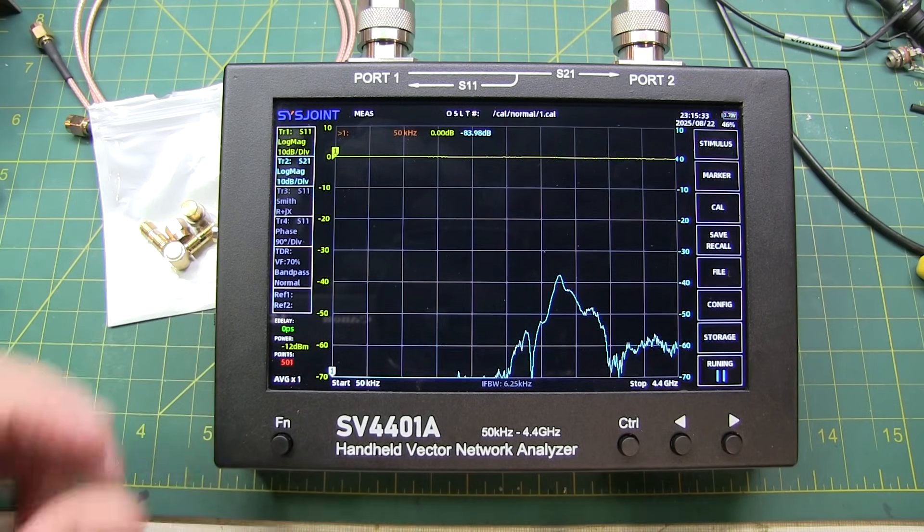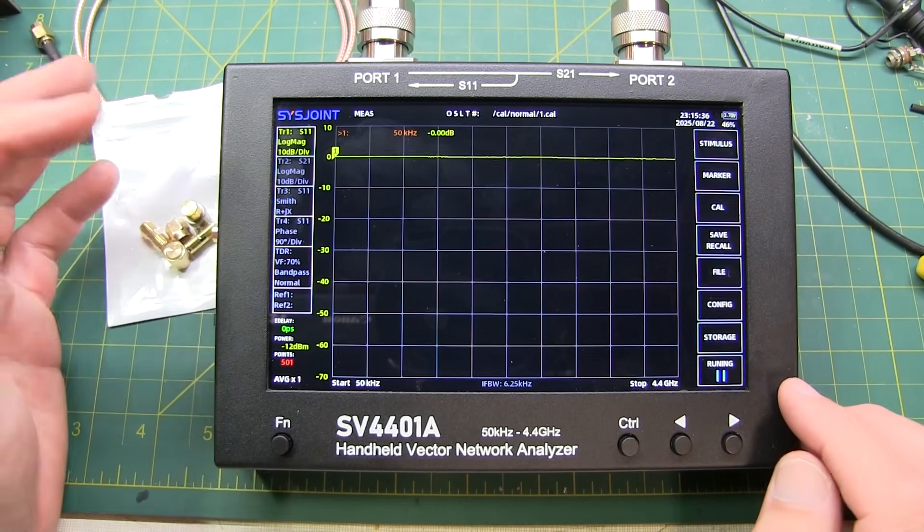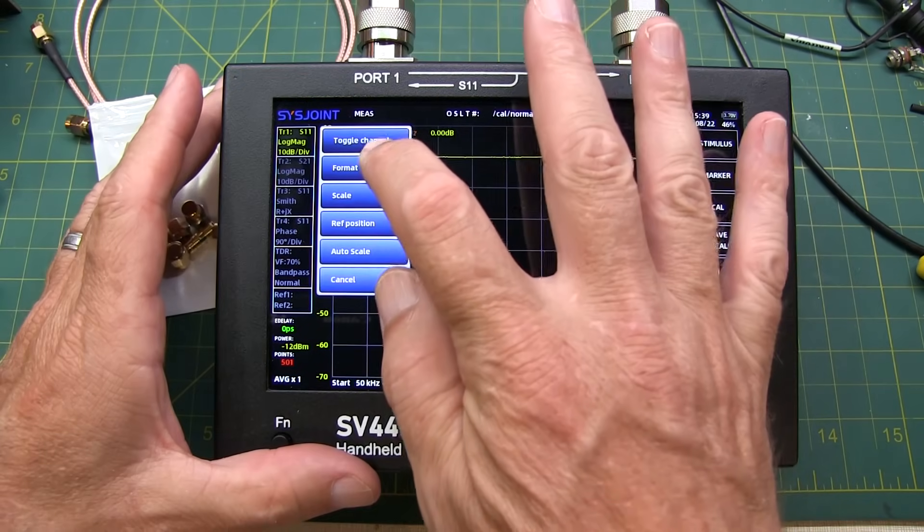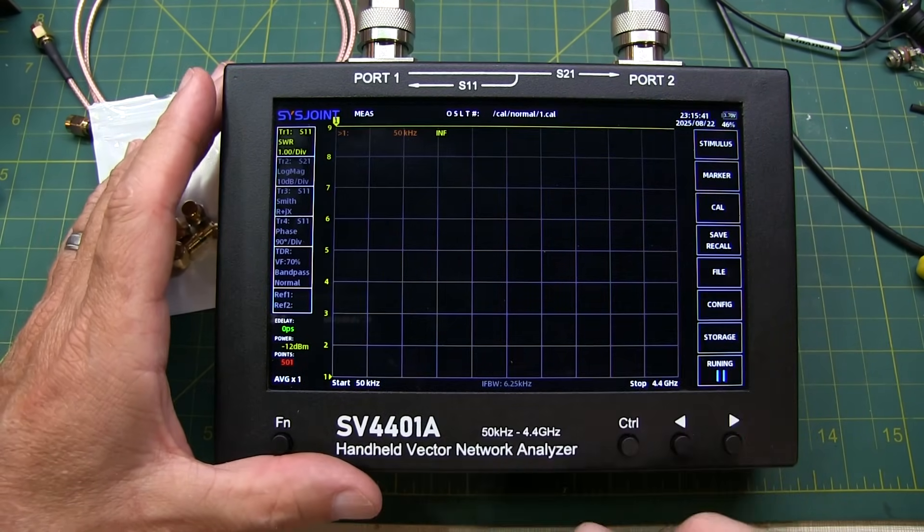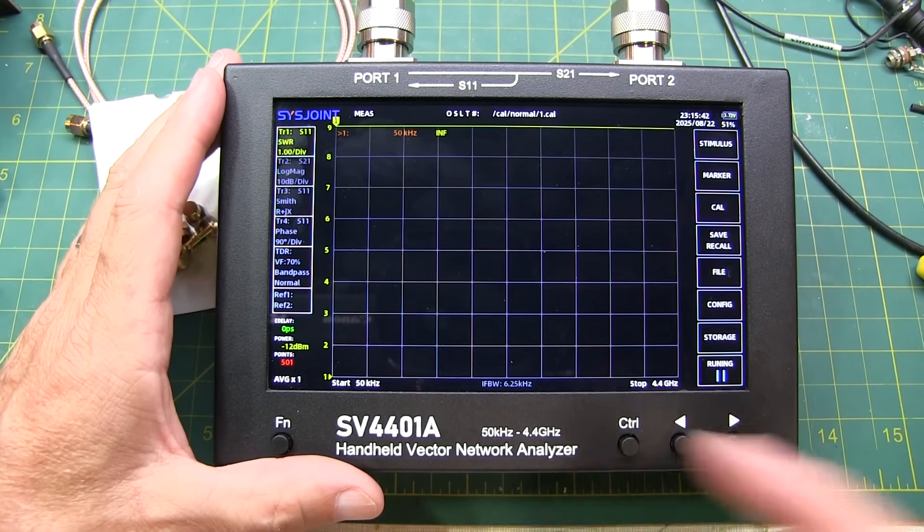You know, simply touch them and turn them on or off. For example, if you just want to do an SWR measurement, I might turn off everything except trace one, touch and hold trace one, and select format, and SWR. And now I've got an SWR trace that I can go look at.